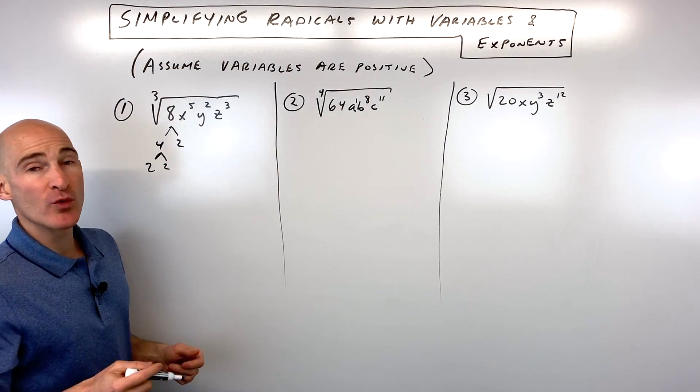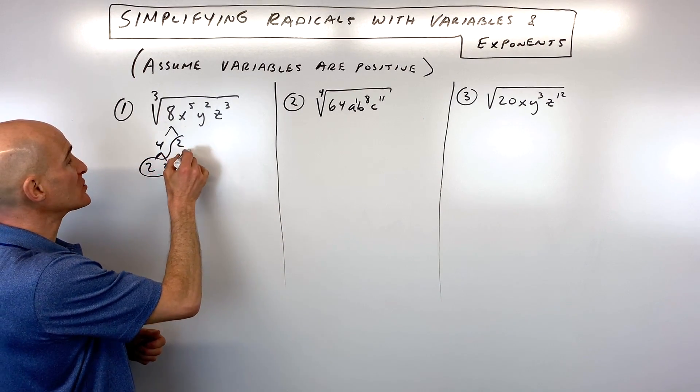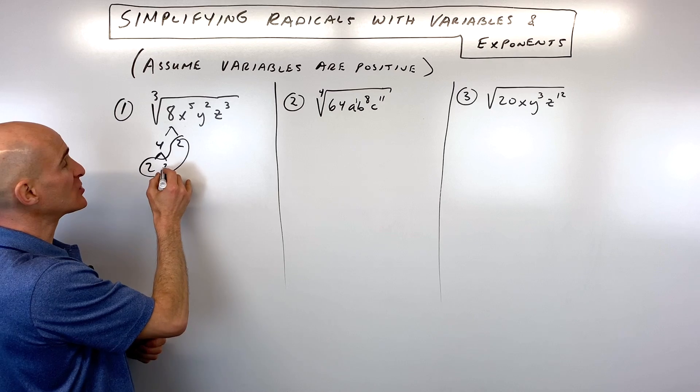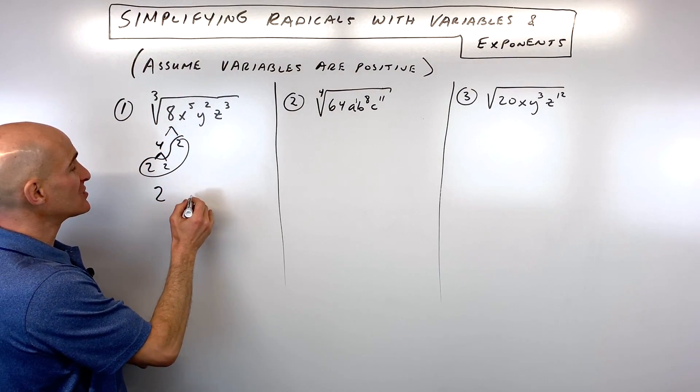But when you're taking the cube root, what you want to do is look for 3 of the same quantity. So you can see we've got 2 times 2 times 2. That's like 2 cubed, but the cube root of 2 cubed is just 2. So you get 2.